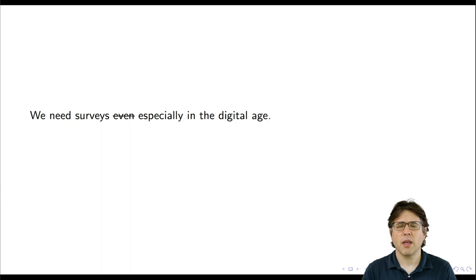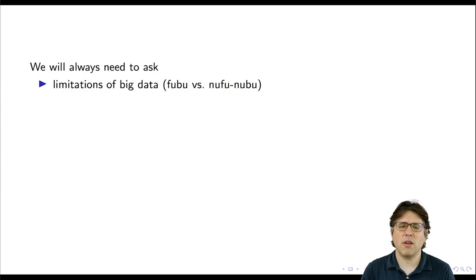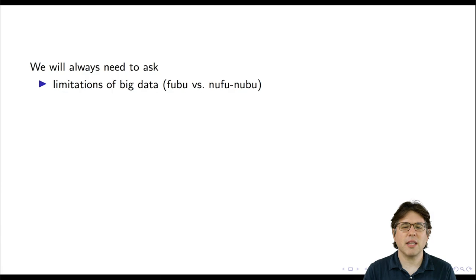I want to talk about why I think we will always need to ask questions, even in the age of big data. The first is the limitation of big data sources. When I was growing up, there was a company called FUBU — they make clothes, and it stands for 'for us, by us.' The key idea in computational social science is that big data sources are not for us and they are not by us.